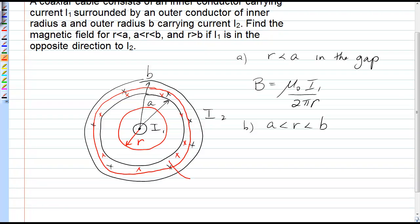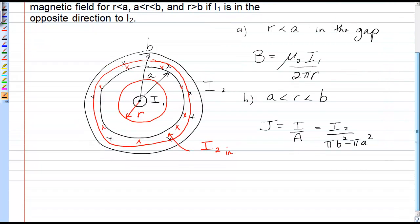So we need to figure out this portion of I2, and I call it I2_in. Now the current densities are uniform for both these conductors. So I can write that J is equal to current over area. If I were looking at the full outer conductor, that would be I2 over the area of that ring, which would be pi b squared minus pi a squared. So that's a constant and that's the current density in that outer conductor.